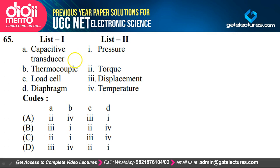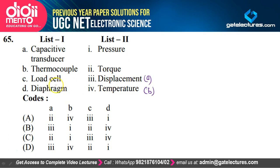Question 65: Matching transducers to measurands — capacitive transducer is related to displacement (A→3); thermocouple is related to temperature (B→4); load cell is related to torque (C→?); diaphragm is related to pressure (D→1). Option B is the correct option. For question 66, the correct answer is D.